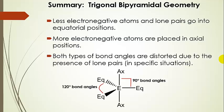To summarize: less electronegative atoms and lone pairs always go into equatorial positions; more electronegative atoms go in axial positions. In an ideal world, the bond angle between the equatorial plane and axial positions is 90 degrees, and bond angles between equatorial bonded atoms are 120 degrees. Both types of bond angles distort when a lone pair is present, except when all three equatorial positions have lone pairs — then all distortions cancel out and the bond angle is 180 degrees, giving a linear molecule.